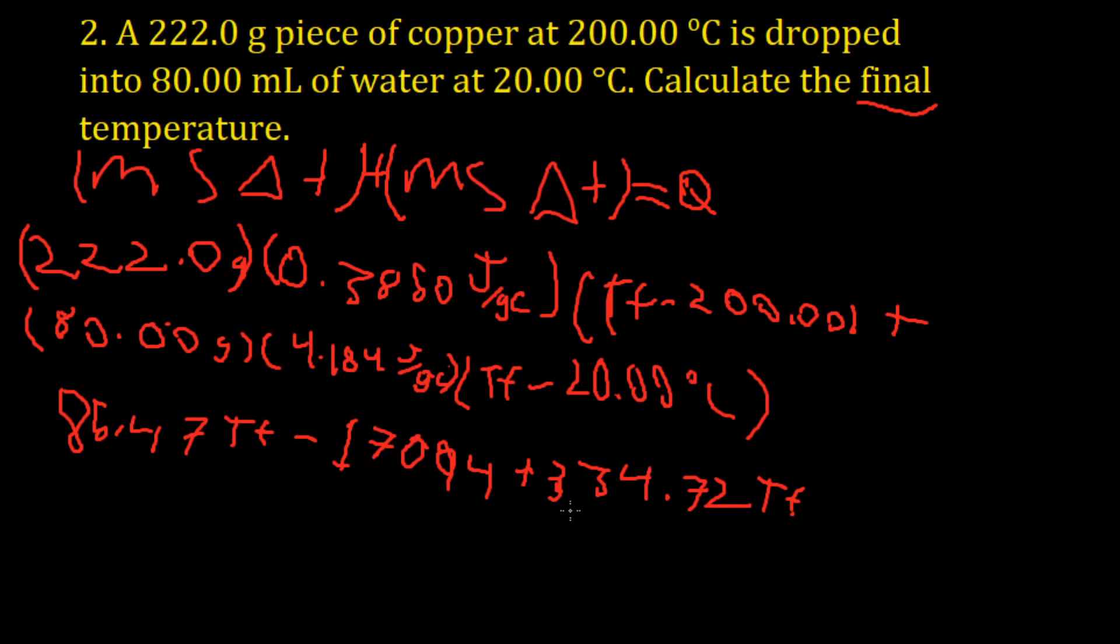And then this number, 334.72, times negative 20, equals minus 6,694.4. So now let's do like we did with the last problem and make sure that both sides are equal.